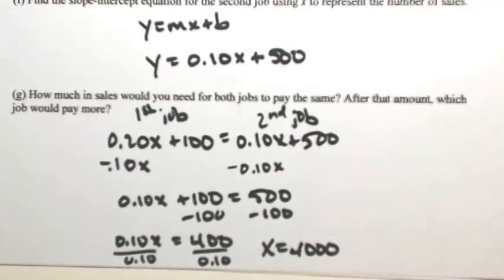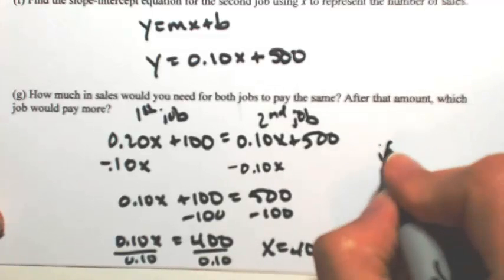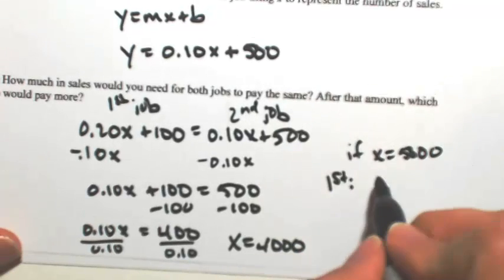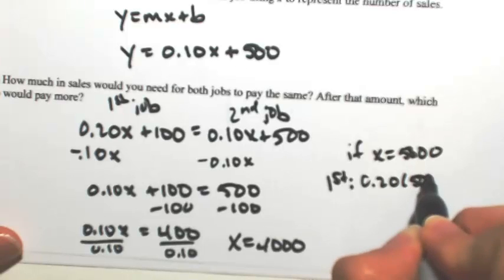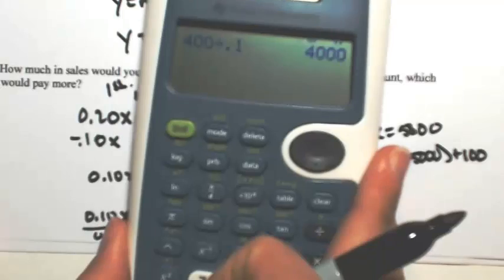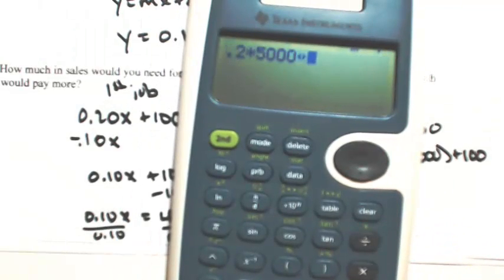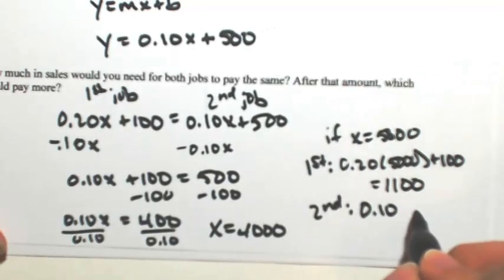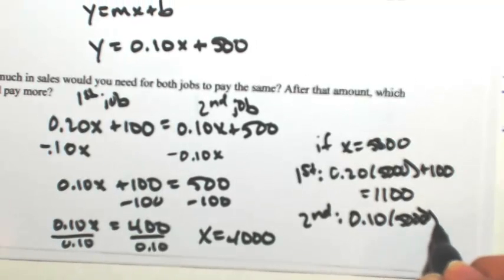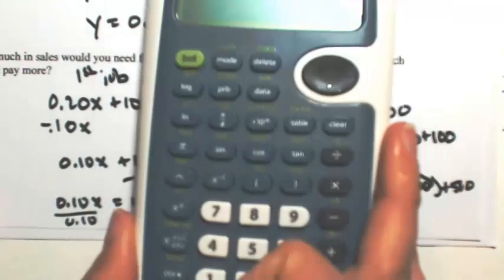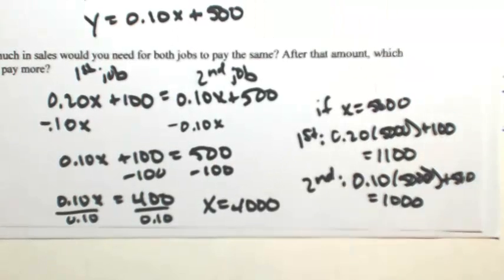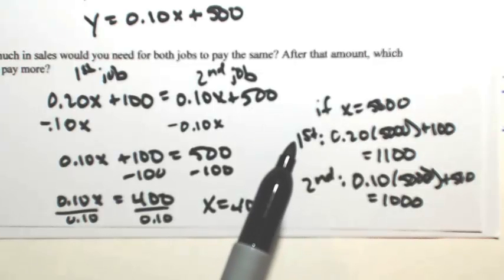Let's see which job pays more when you sell more than $4,000. Say x is $5,000. In the first job: 20% of 5,000 plus 100 is $1,100. In the second job: 10% of 5,000 plus 500 is $1,000. The second job pays less. So even though the second job has a higher base salary, the more you sell the better the first job is, because of its higher commission rate.